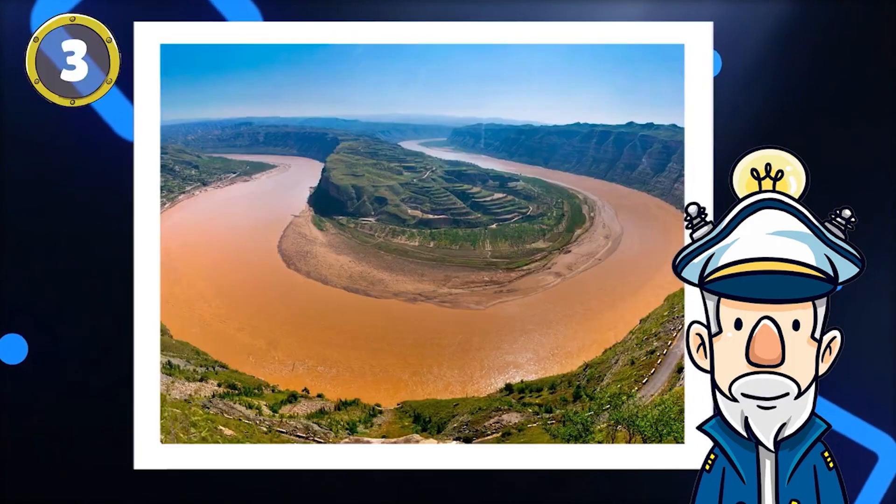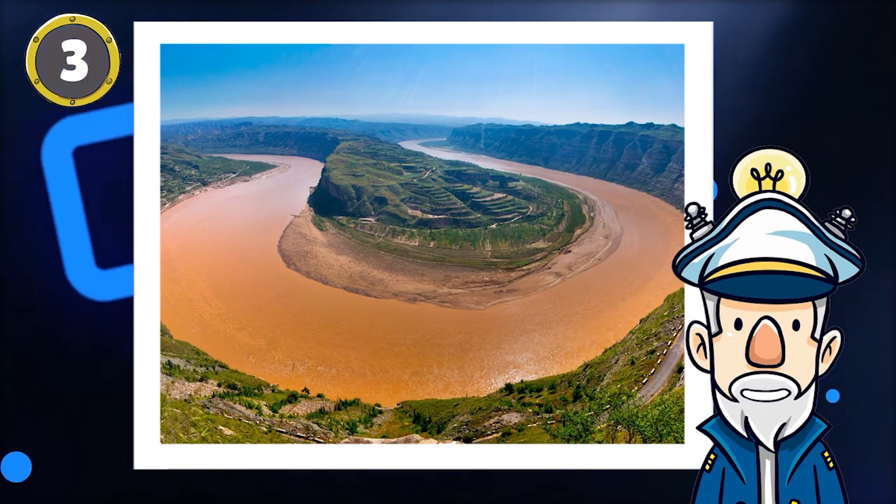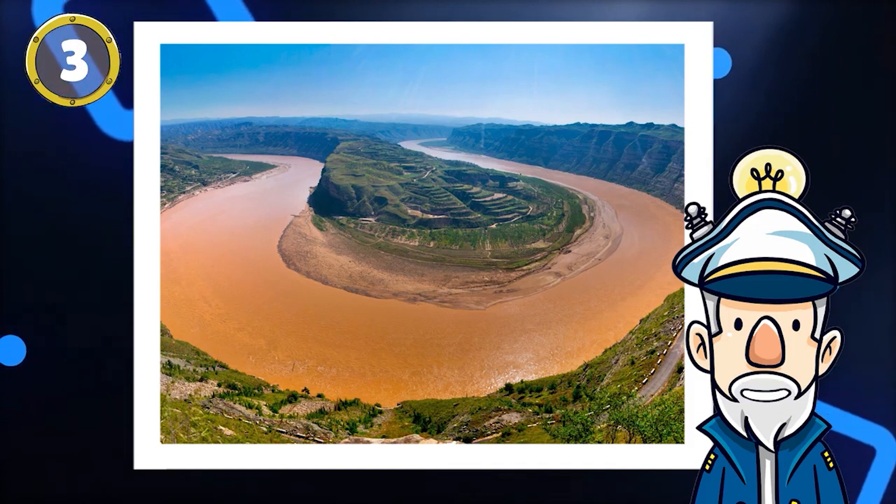Number 3: The Yellow River, Huanghi, in China, has had the four deadliest flood events in world history. The floods in 1931 resulted in 1 to 4 million people being killed.